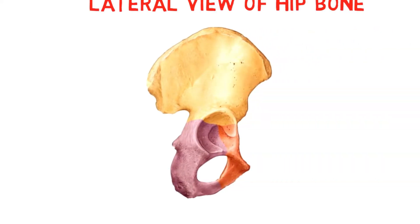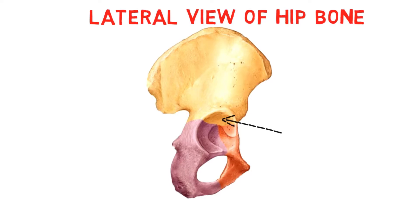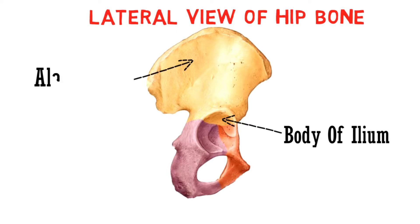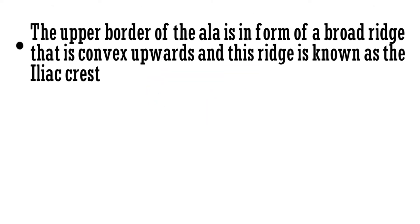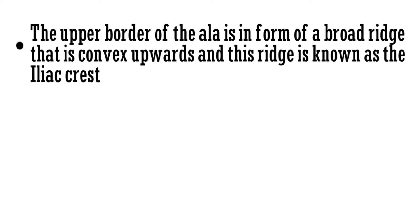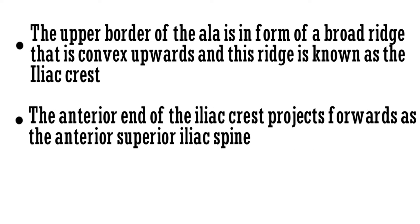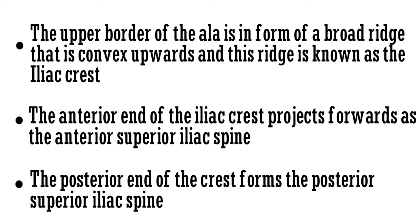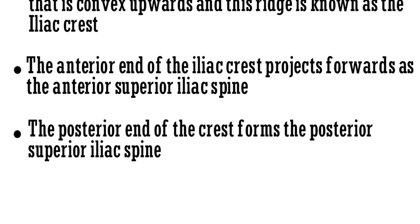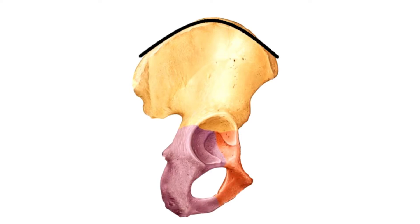This is the lateral view of the bone. This part of the ilium is the body of the ilium that forms the roof of the acetabulum, and this plate-like part is the ala of ilium. The upper border of the ala is in the form of a broad ridge that is convex upwards, known as the iliac crest. The anterior end of the iliac crest projects forwards as the anterior superior iliac spine, and the posterior end forms the posterior superior iliac spine.